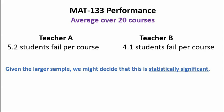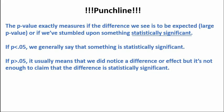We have to be able to decide when a difference is significant enough to say that something is statistically significant — that's the whole punchline of the p-value and how it relates to statistical significance. The p-value measures exactly whether the difference we see is to be expected, which would result in a large p-value, or whether we've stumbled upon something statistically significant.